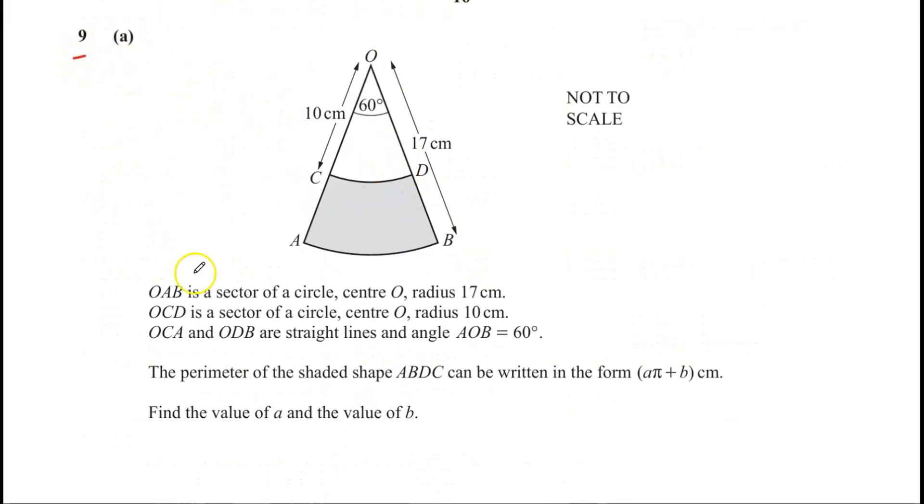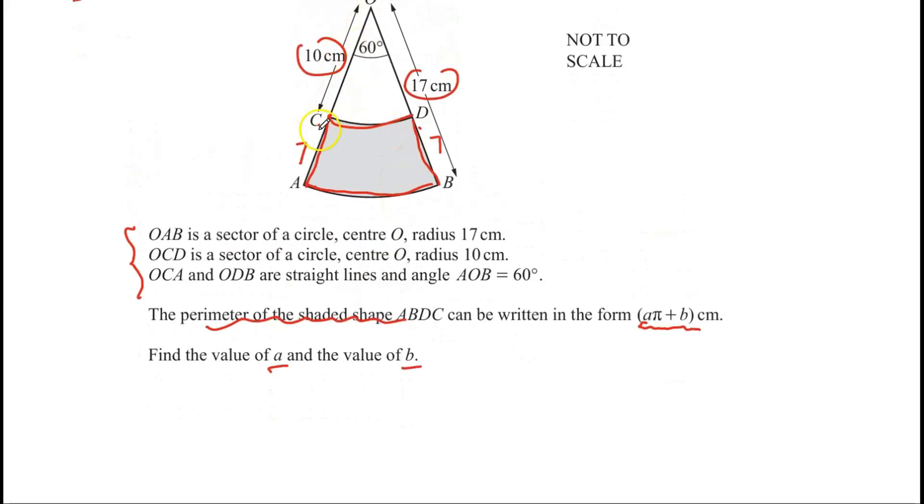Question number 9. Part A. All this information is given over here. The center is there. Radius is 7. Radius is 10 for the smaller sector. The perimeter of the shaded shape ABCD can be written in the form A pi plus B centimeters. Find the values of A and B. So now perimeter is the sum of all sides. You're talking about the perimeter of the shaded shape. So here we have AC and BD. So if this is 10 and total is 17, so AC and BD must be 7 each. So we can easily add that. Now we need to find the length of this arc CD and the length of arc AB. So let's work out. Angle is 60 degrees. And this radius for CD is 10 centimeters.